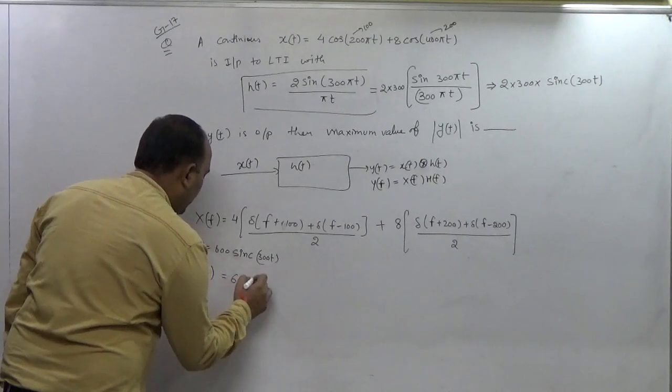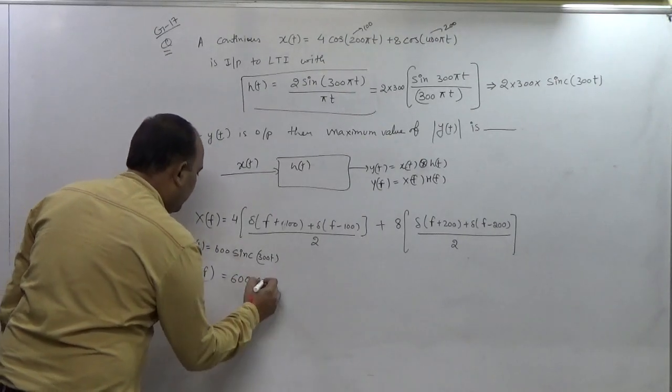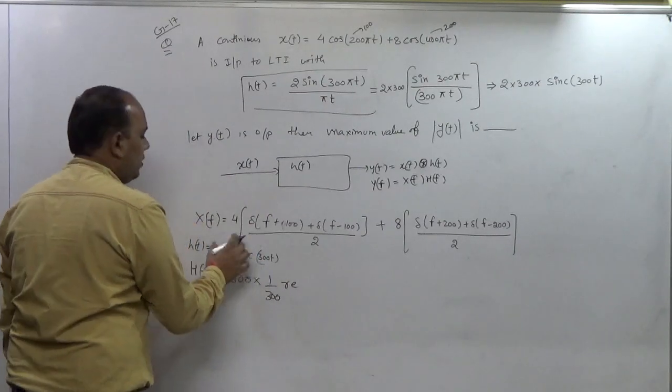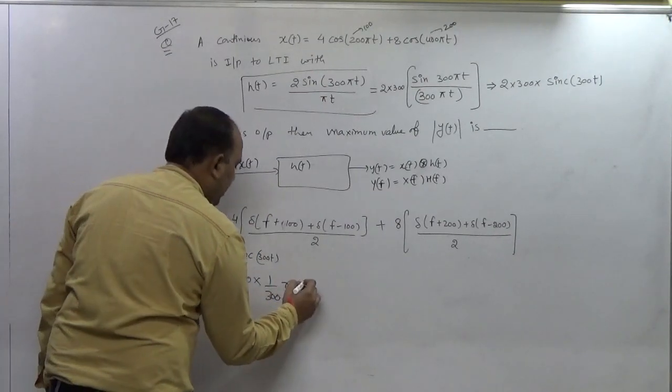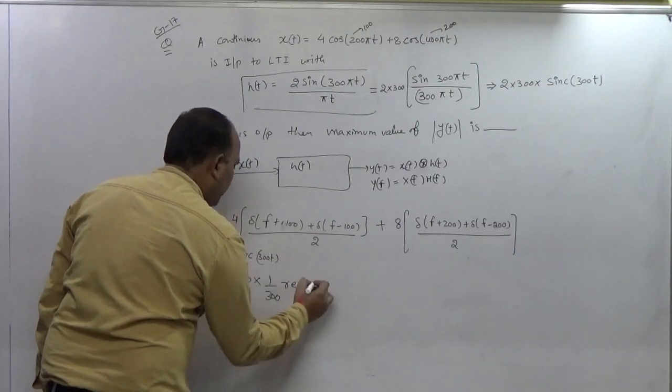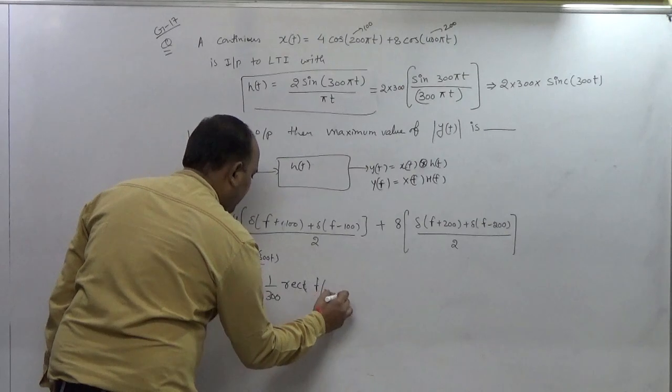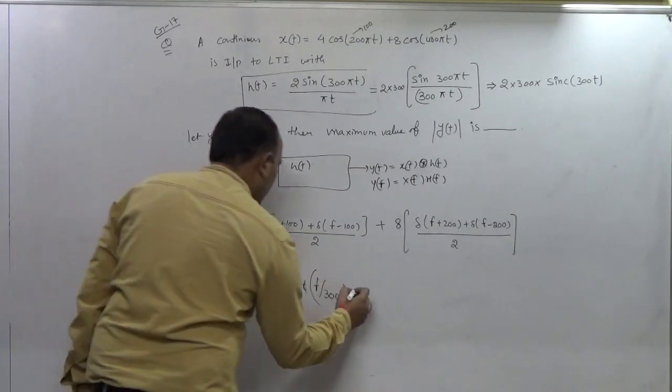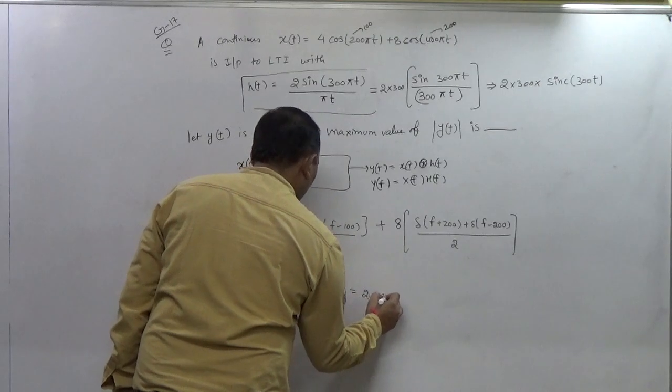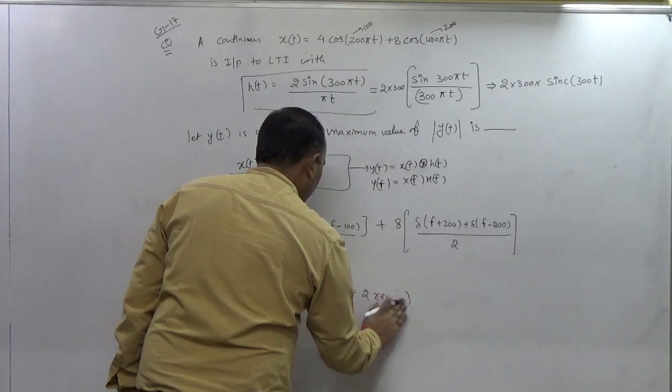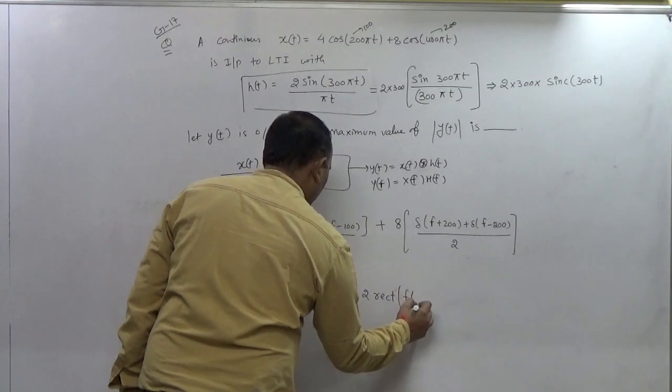So the Fourier transform of sinc function is rectangle, and f by 300 will be divided. So that becomes 2 rectangle of f/300.